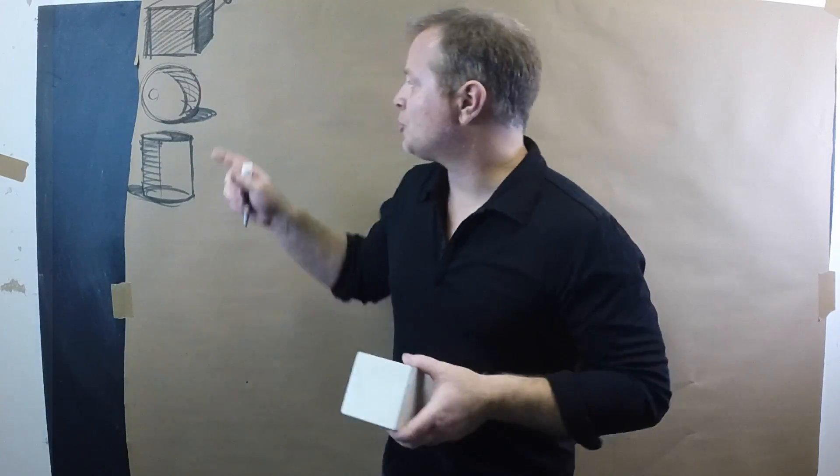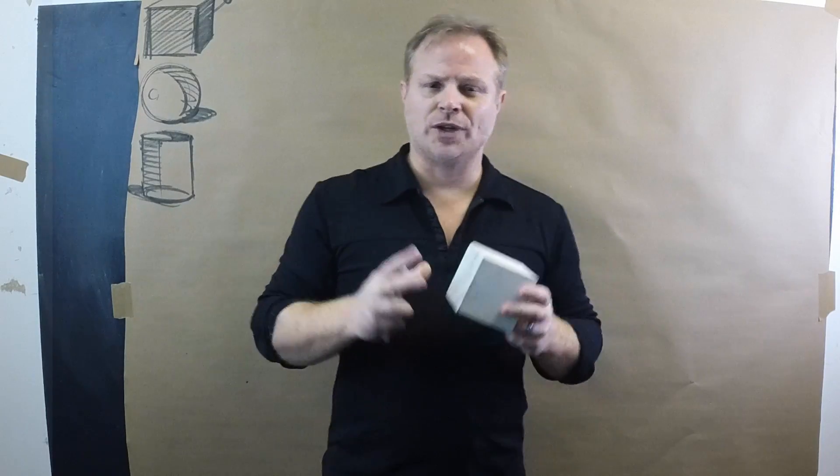After we understand these three basic forms, the next principle we want to start to understand is our point of view. Where are we located in relationship to the object? I'm pretending like you are the one looking at the cube, which you are now. The next phase to understand is the cube in your relative eye level. Do you see the top or bottom? And if you don't see any of it, the form is then relative to your eye level.